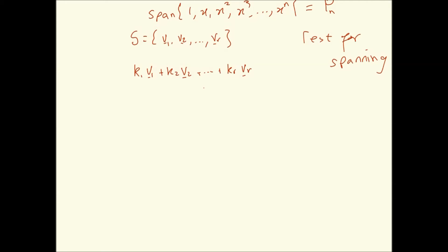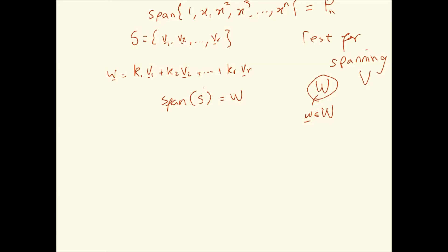We have to be able to show that whatever space — if they span some subspace W of V — then any w belonging to capital W should be expressible as a linear combination of these vectors. If we choose an arbitrary w as a representative of the subspace it comes from, any arbitrary w should be representable as a linear combination. If we can prove that, then the span of set S is W.